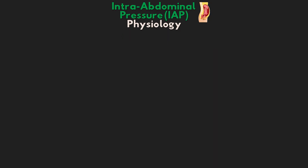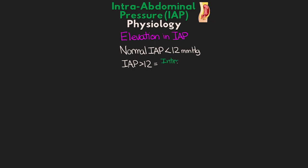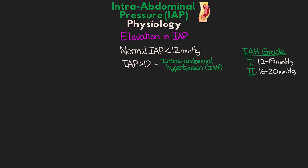The high end of normal for intra-abdominal pressure is less than 12 mmHg. As the pressure rises and sustains above 12, it's something we consider intra-abdominal hypertension, or IAH. We can actually grade the degree of IAH: Grade 1 is 12 to 15 mmHg, Grade 2 is 16 to 20 mmHg, Grade 3 is 21 to 25 mmHg, and Grade 4 is greater than 25 mmHg.